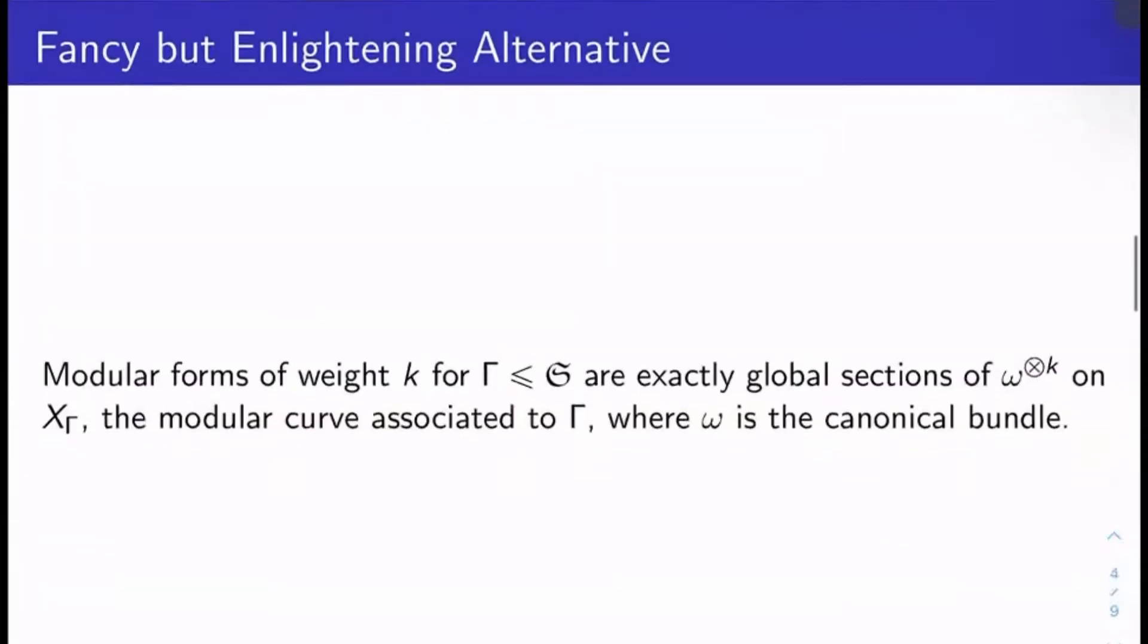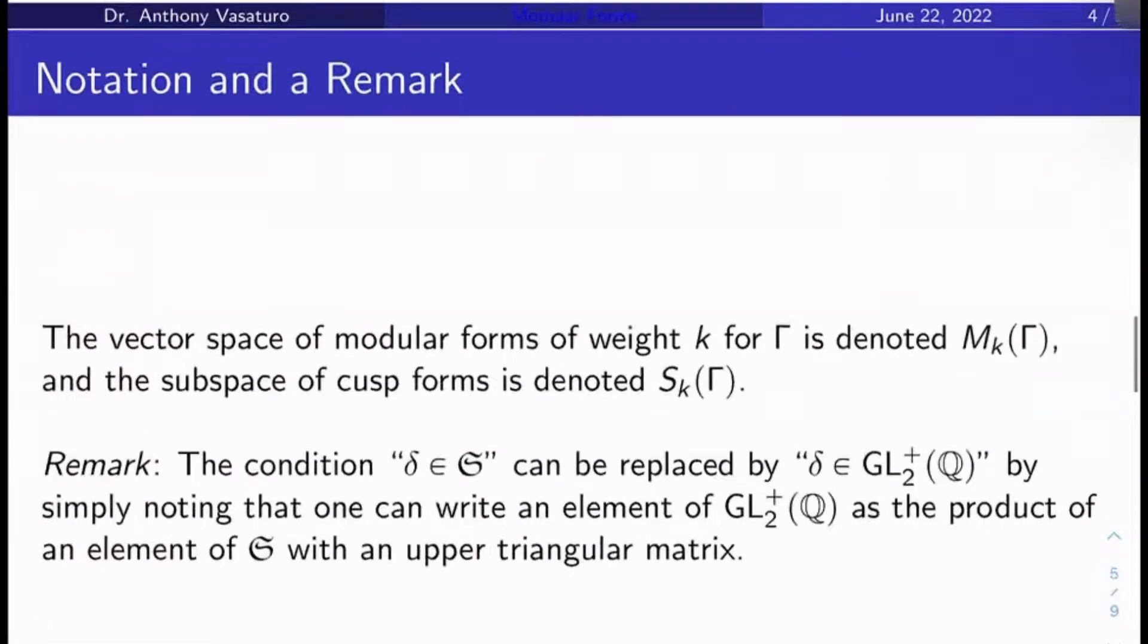If you like, if you already understand modular curves and algebraic geometry and line bundles and all that kind of stuff, a more enlightening definition of modular forms is modular forms of weight k for gamma a subgroup of SL_2(Z) are exactly the global sections of the kth tensor power of omega on the modular curve X_Γ associated to gamma. We'll be defining this soon. Here, omega is the canonical bundle on this modular curve.